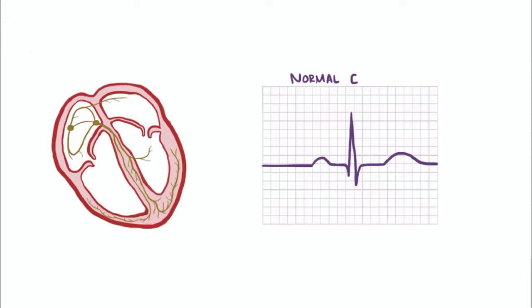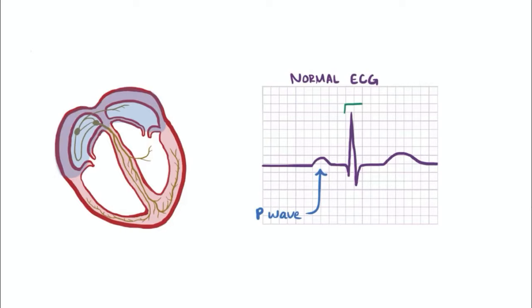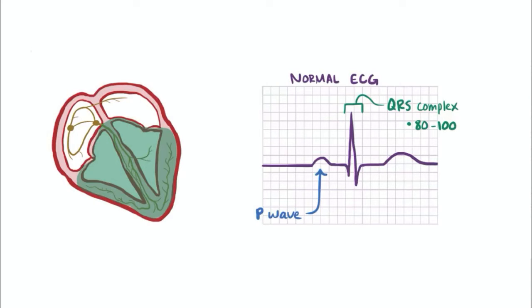Now, on an electrocardiogram or ECG, normally you have the characteristic P wave, which corresponds to the atria contracting, then the QRS complex, which corresponds to both ventricles contracting and is usually between 80 and 100 ms long.